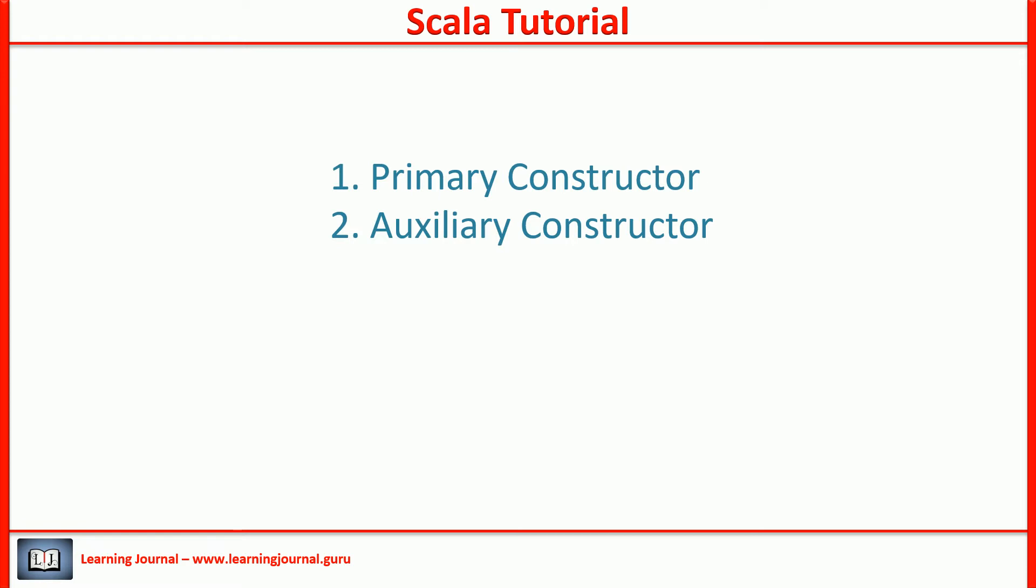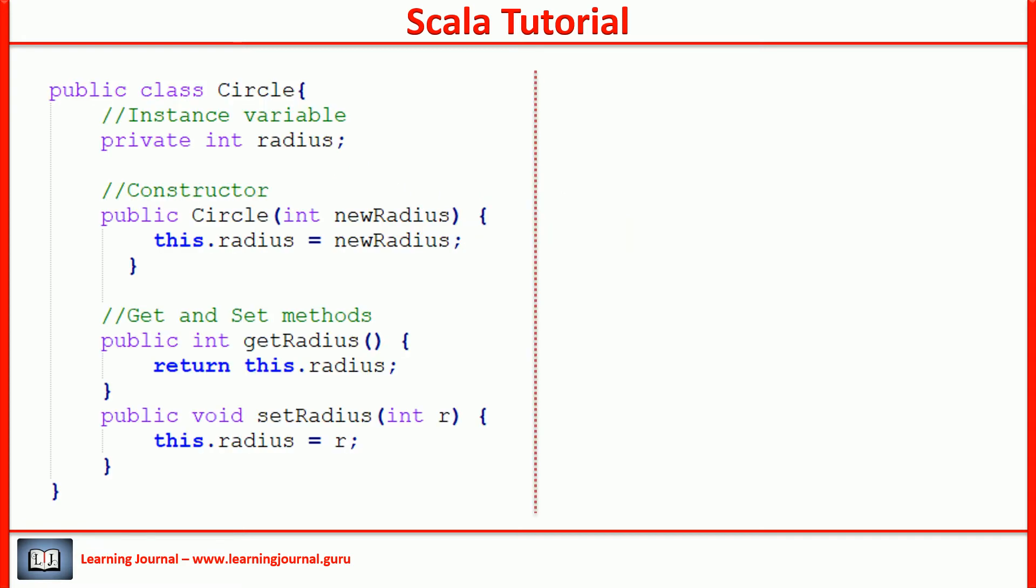I want to take you back to the Java world and build Scala concepts on top of that. So, let's look at the typical Java class. We have a public class. We declare some private variables. Create a constructor. Then we create a get and a set method. Scala's philosophy is to save you from unnecessary typing and help you create a concise code. On that note, we already learned that if we make the radius public, we can get rid of these two methods. Scala compiler will automatically generate these methods.